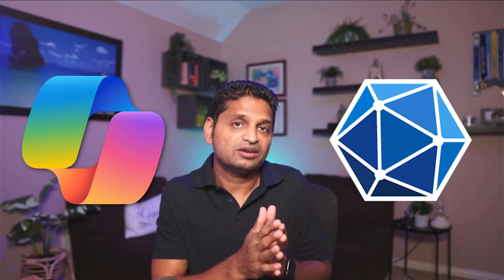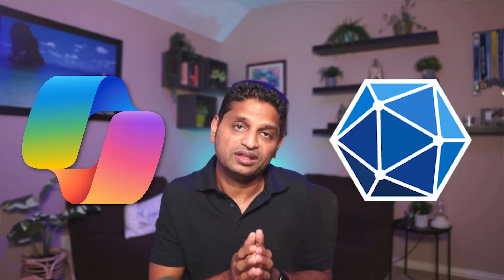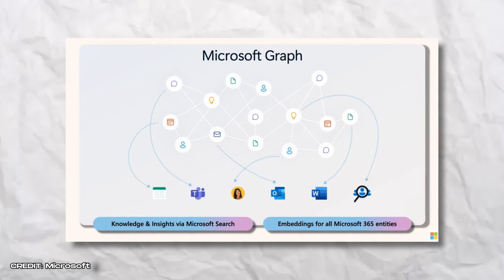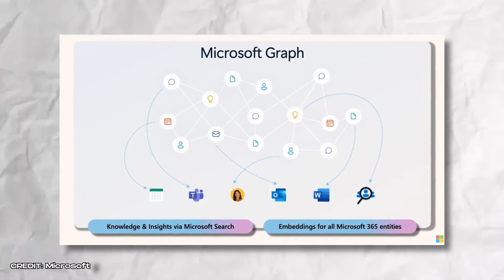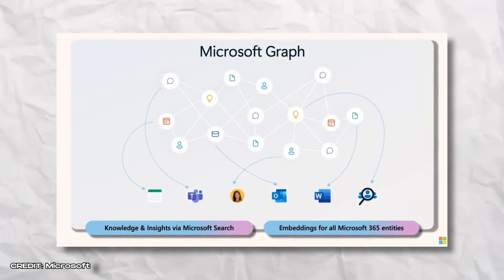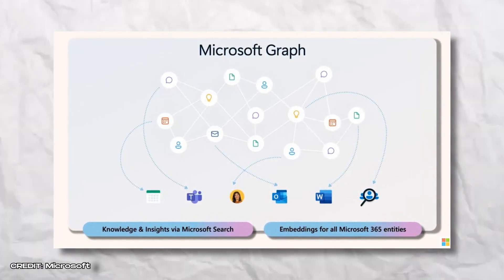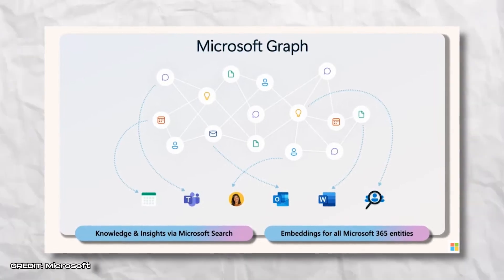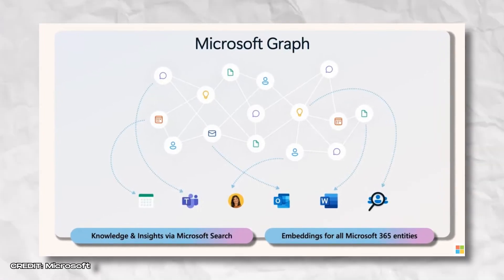The Microsoft 365 Copilot, which comes along with your Word or Excel, comes with Microsoft Graph, which is trained on the organization's data. So depending on how your IT team has trained your copilots, it can provide super useful responses with the context of your documents or spreadsheets plus your company data.